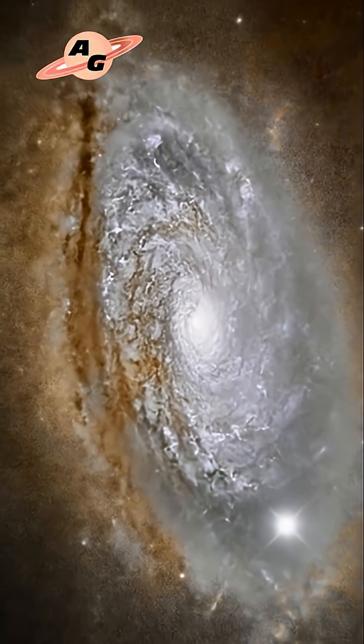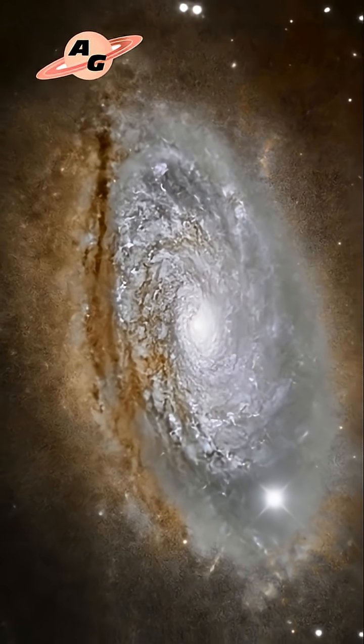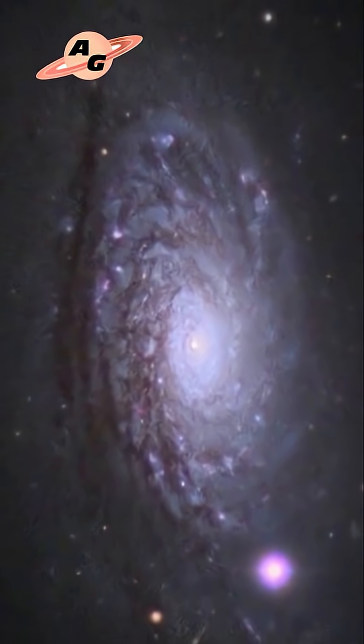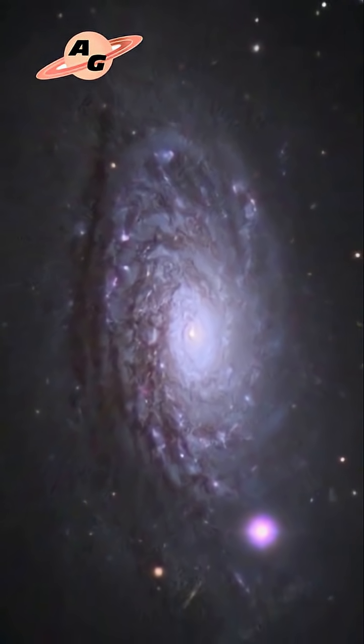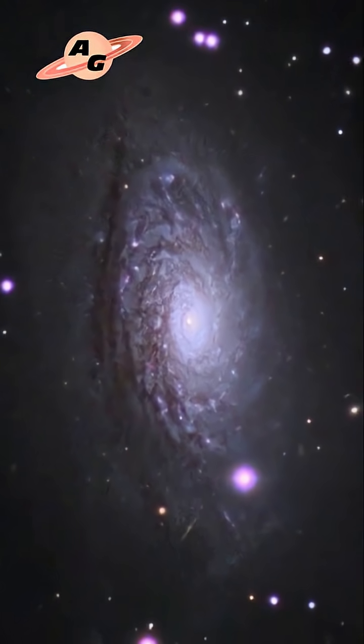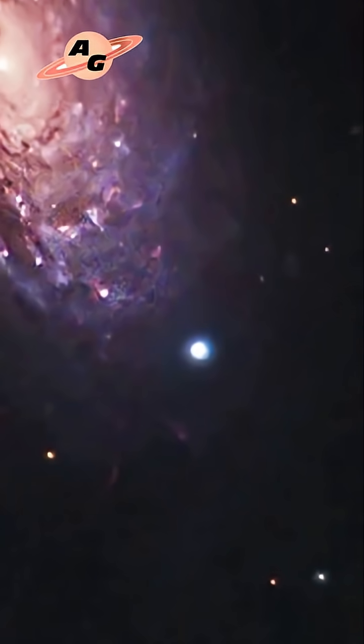Although the spiral arms are somewhat patchy and lack a clear structure, infrared observations have revealed a large amount of dust within them, forming a ring around the galaxy's core, which determines the process of new star formation. These stars are mostly supermassive and extremely hot, which explains their short lifespans.